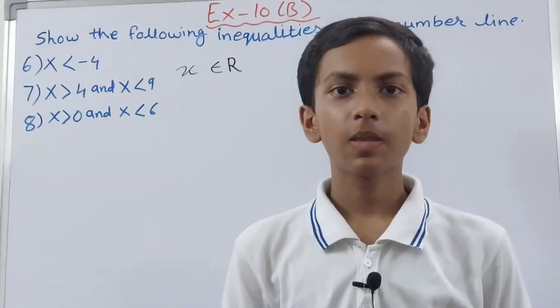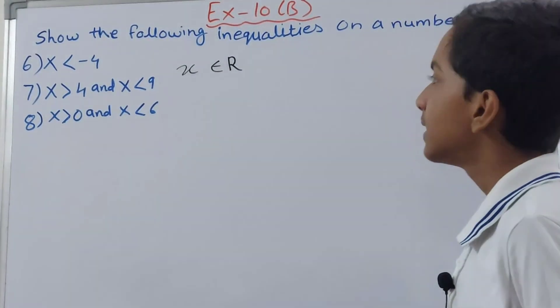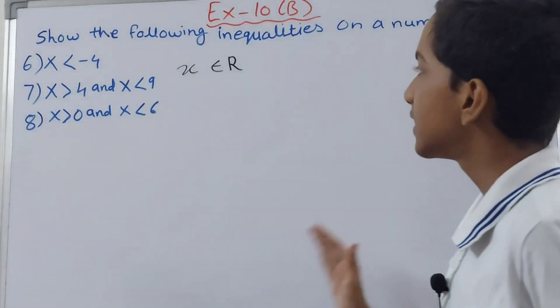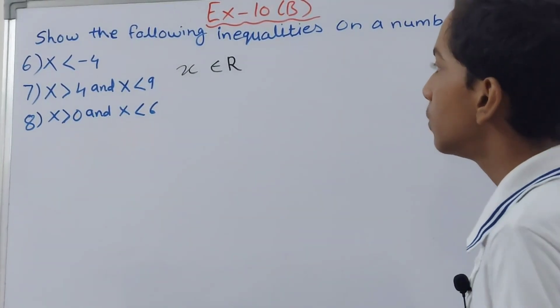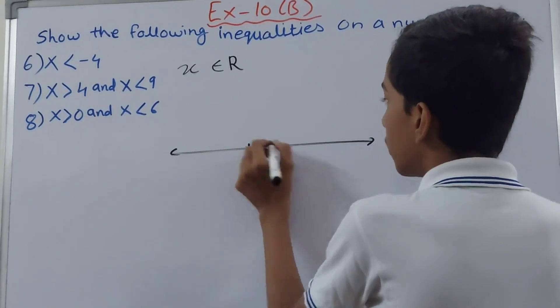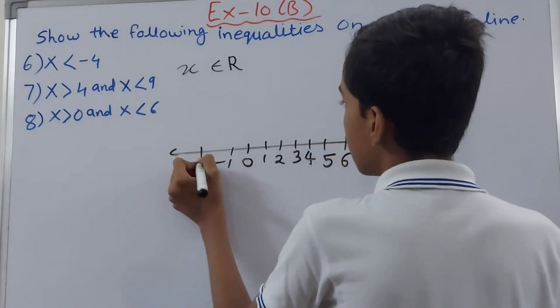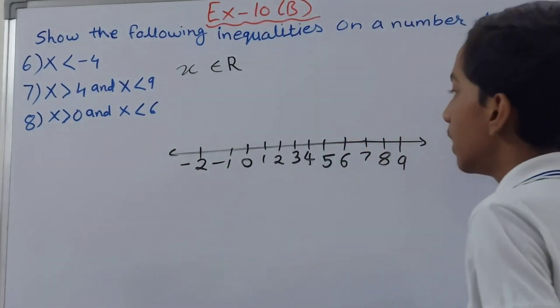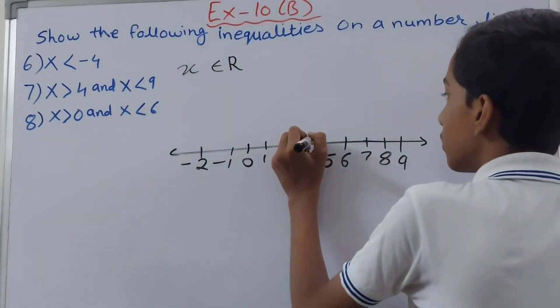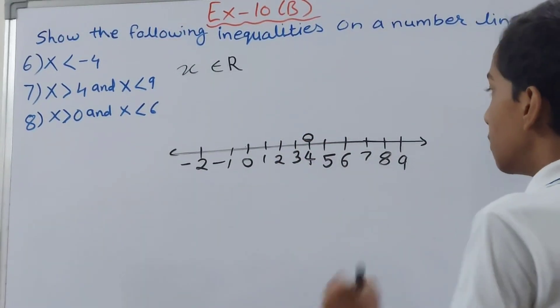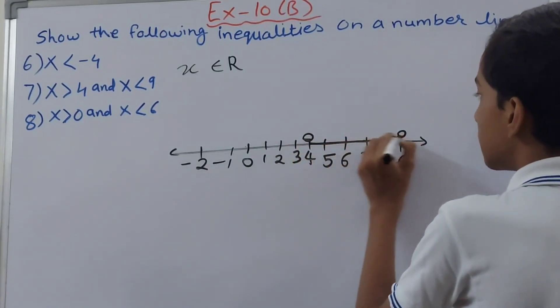Friends, now we move on to the next part and this part is x is greater than 4 and x is less than 9. Now friends, over here what we will do is first draw the number line with negative values like this. Now you see that value of x has to be more than 4, so open circle on 4. Then it has to be less than 9, so another open circle on 9, and then we connect this thing.